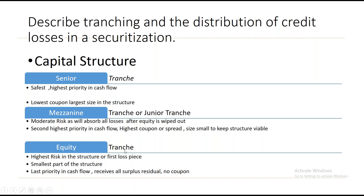The equity tranche at the bottom has the highest risk in the structure and is the first-loss piece. Any default that happens in the pool — after exhausting the excess spread, over-collateralization, and everything else — is borne by the equity tranche. After making all payments to senior and mezzanine, if payments are not sufficient, equity tranche bears the loss. It is the smallest, thinnest part of the structure, has the last priority in cash flow, receives all surplus residuals, and has no coupon.